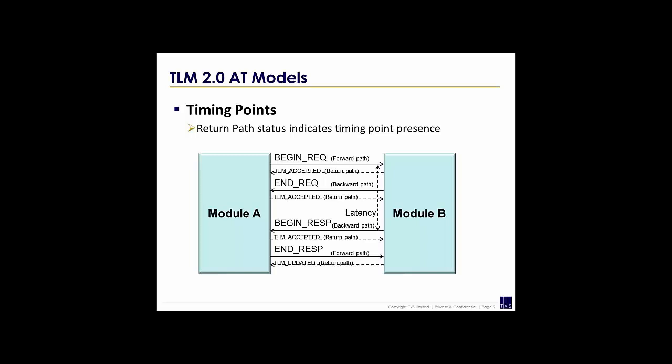Module B computes its result and sends back the response using the begin response phase. The latency between begin request and begin response represents the performance of module B. Again TLM_ACCEPTED on the return path indicates another timing point is pending. The final timing point is end response, which is an acknowledgement from module A to module B terminating the communication, using TLM_UPDATED to indicate no further timing points. There is also a return value called TLM_COMPLETED, which is not mandatory according to the LRM.